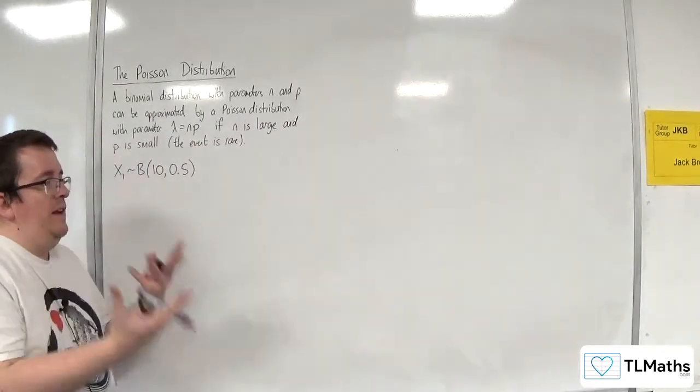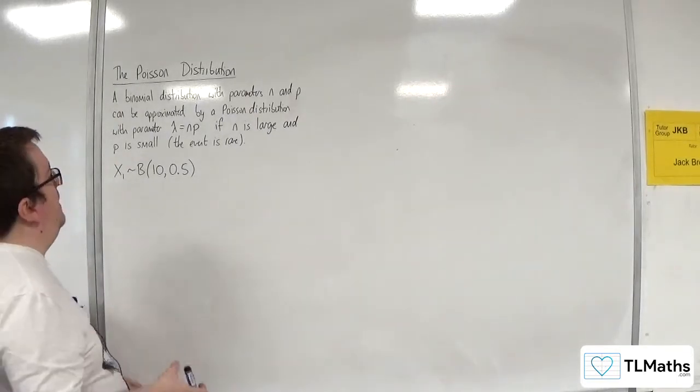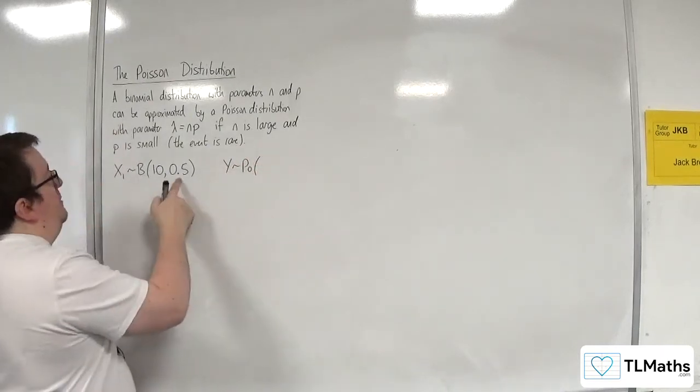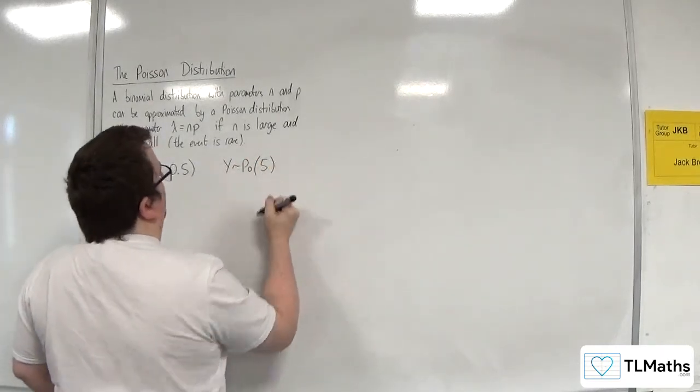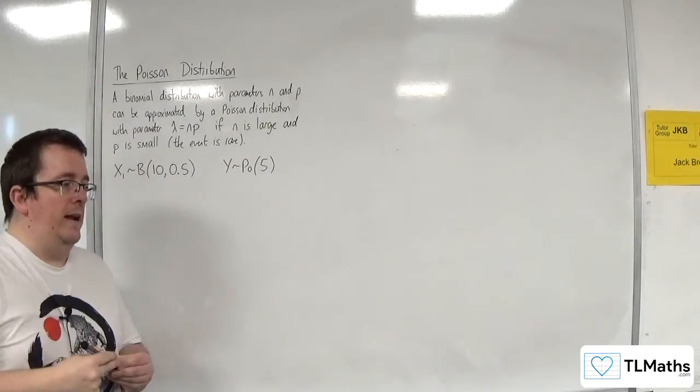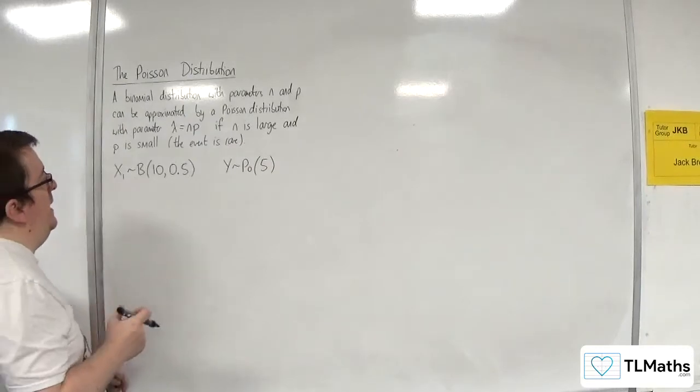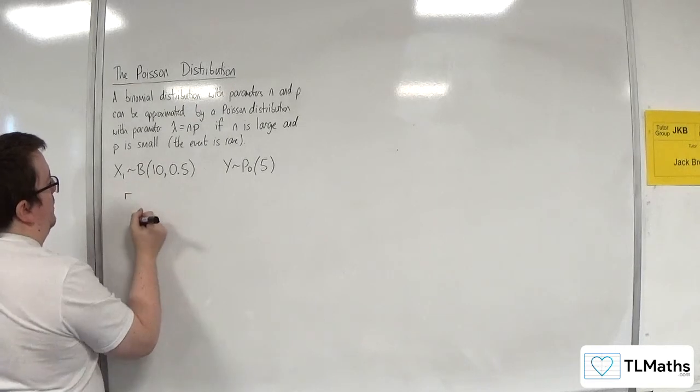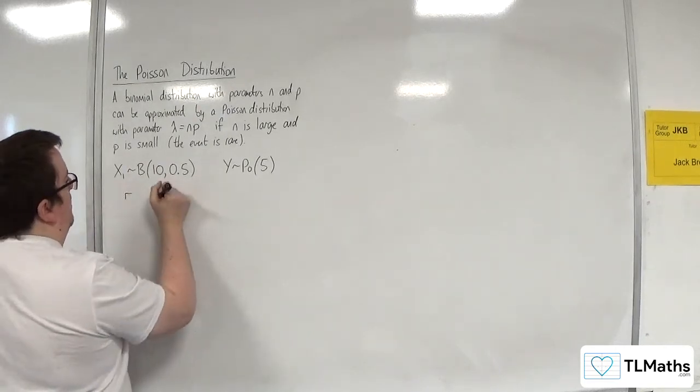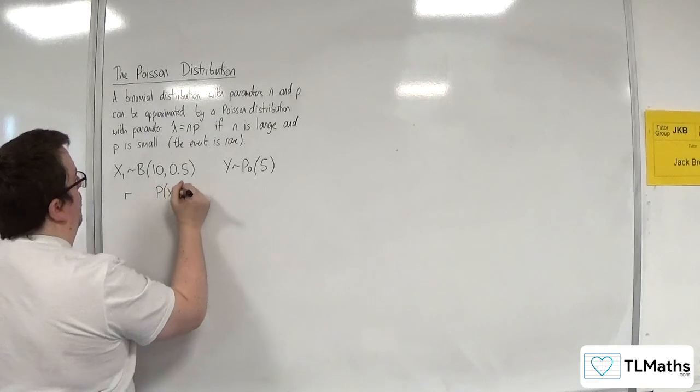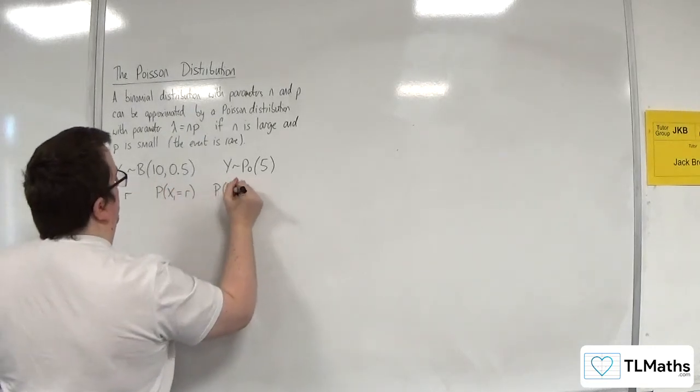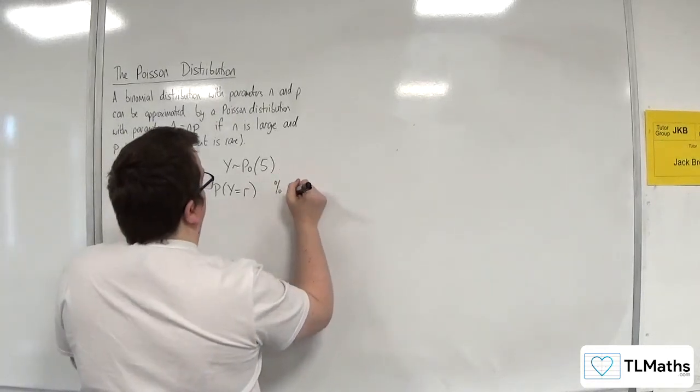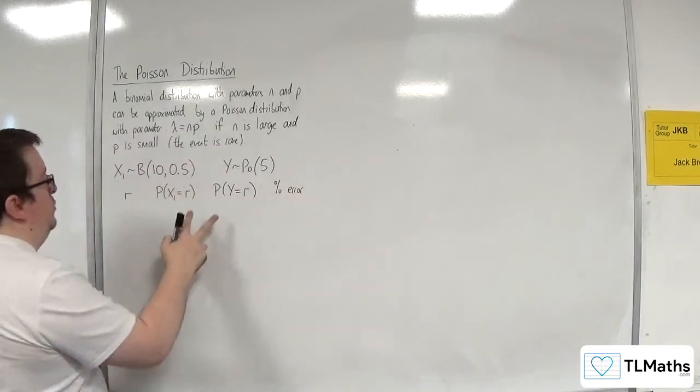But we could then think, the Poisson distribution that would approximate it, let's call it y, would be n times p, so a Poisson distribution of 5, with the lambda as 5. So what we're going to do is we are going to set up a table of results where we're going to have the value of r. We are going to have the probability of x1 being equal to r, and the probability of y being equal to r. And we're going to work out the percentage error between those two results.